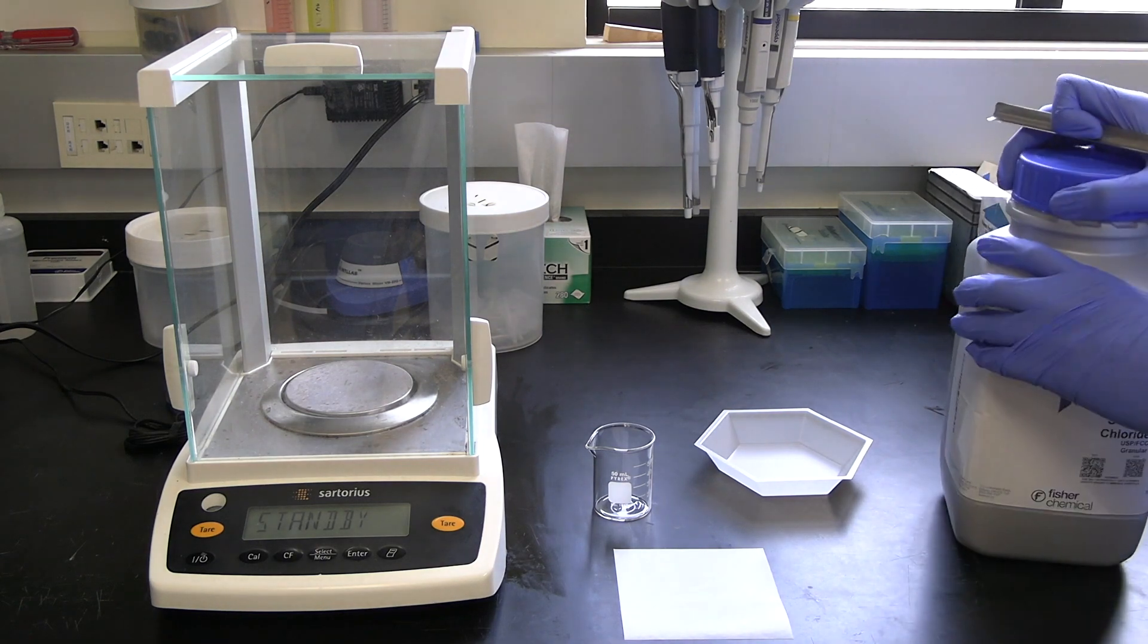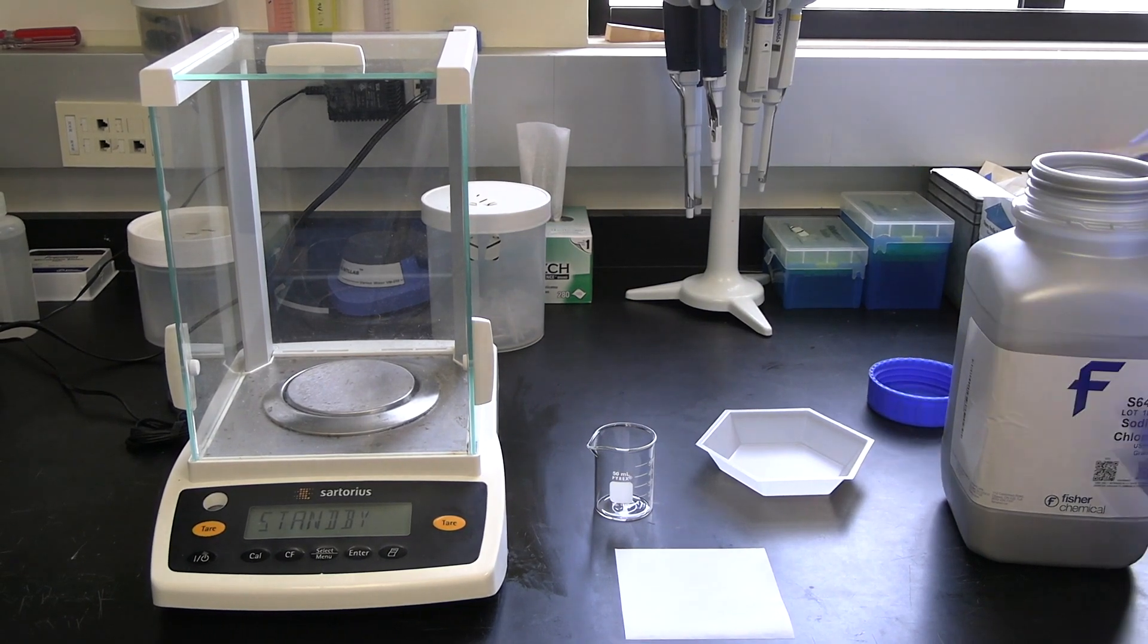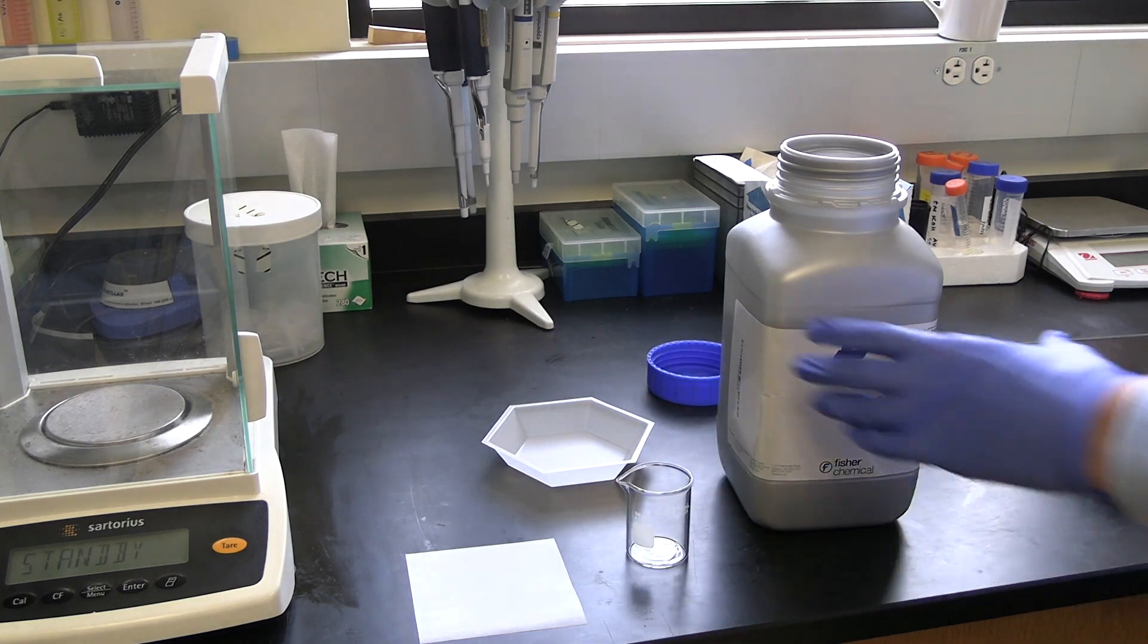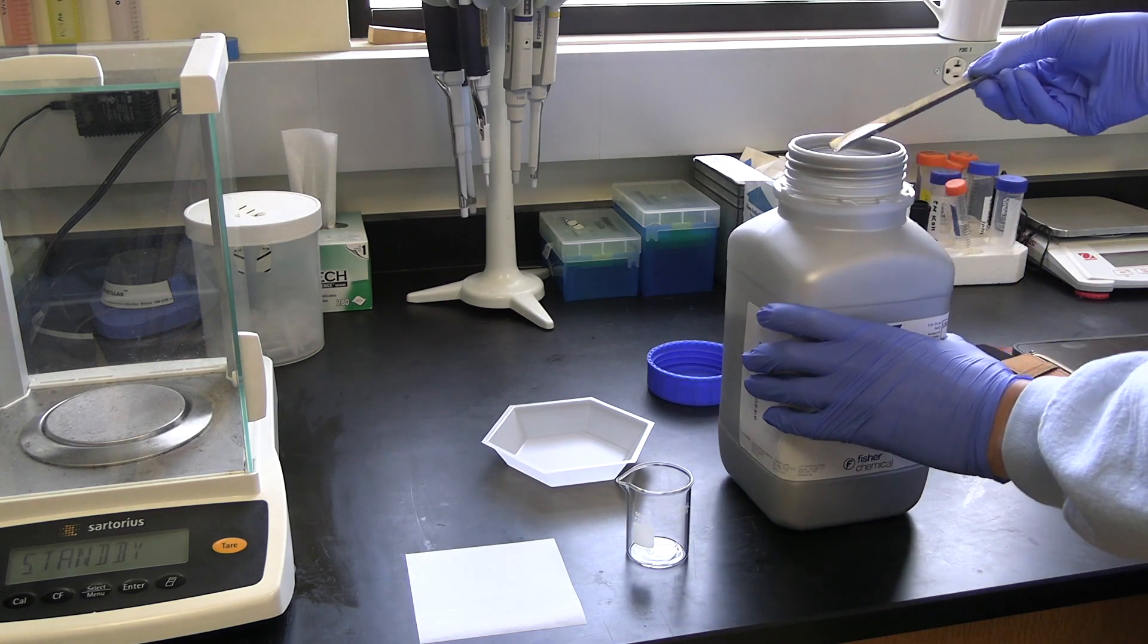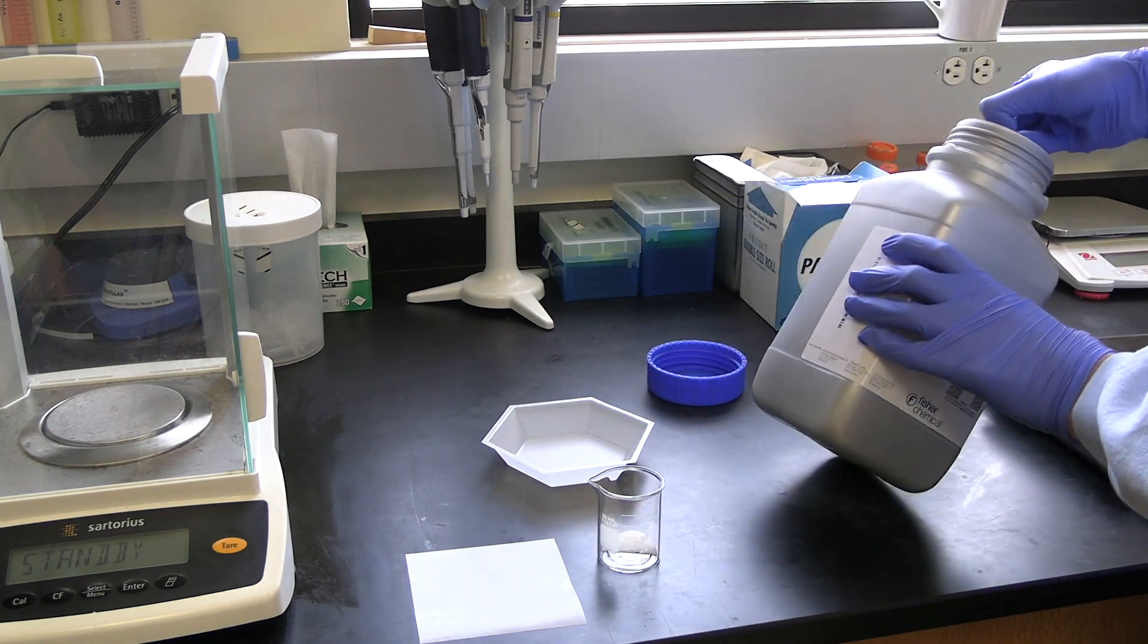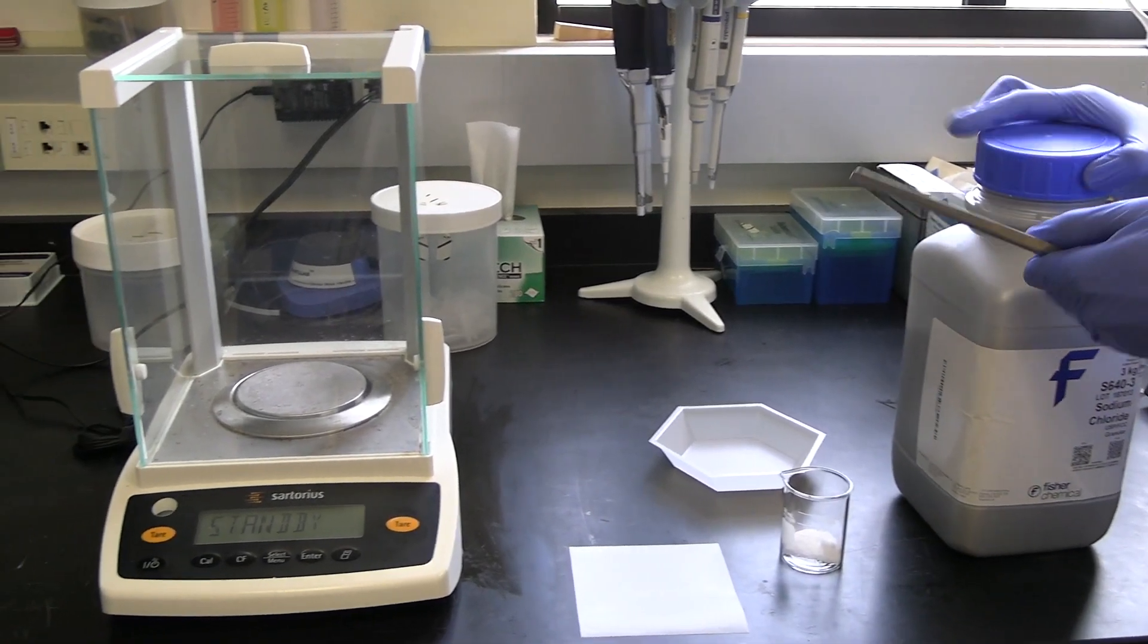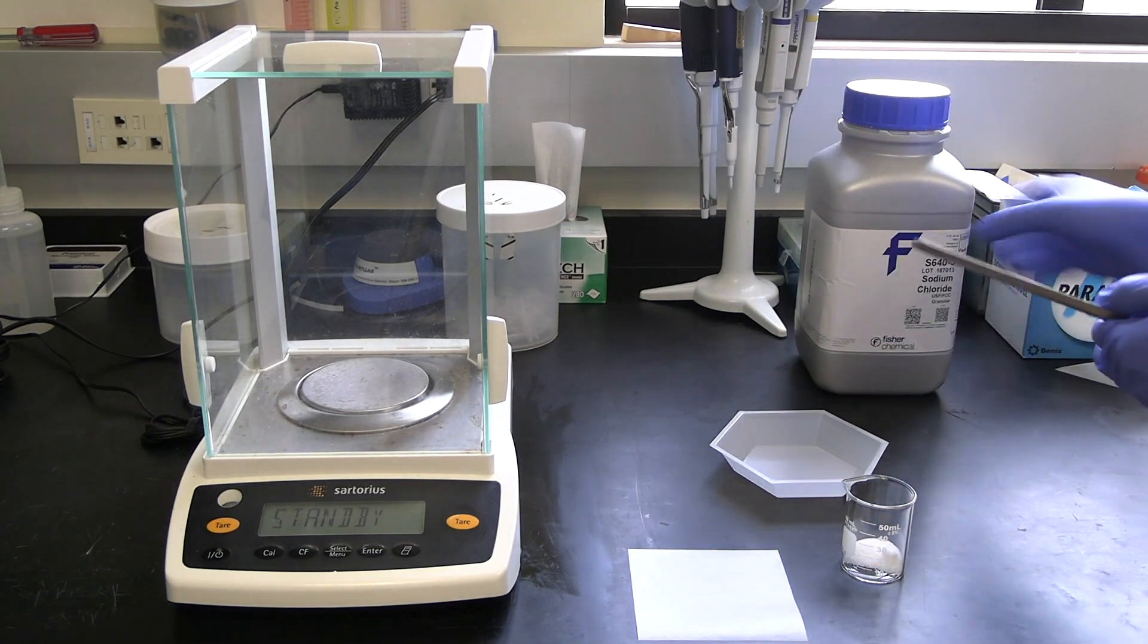Because this container is so large, we in general want to not double scoop from the stock container. So, we're going to use this spatula and put some of this sodium chloride into another container that we can repeatedly scoop from without risk of contaminating or making bad the original stock. So we're just pouring out an arbitrary amount of table salt. Once we're done with the stock container, we'll just cap it back up and put it aside and put it away later.